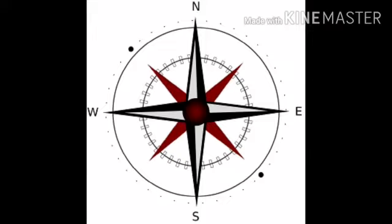Next is directions. In a map, the directions are extremely important. Maps are drawn using the four directions: east, west, north, and south. On a map, east is always on the right side, west on the left, north at the top, and south at the bottom.